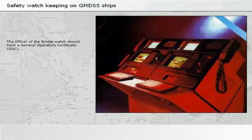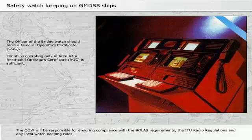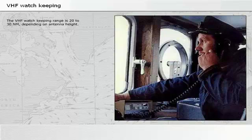The officer of the bridge watch should have a general operator's certificate. For ships operating only in area A1, a restricted operator's certificate is sufficient. The officer of the watch will be responsible for ensuring compliance with the SOLAS requirements, the ITU radio regulations, and any local watchkeeping rules. The VHF watchkeeping range is 20 to 30 nautical miles, depending on antenna height.